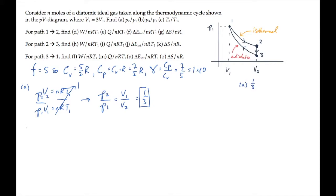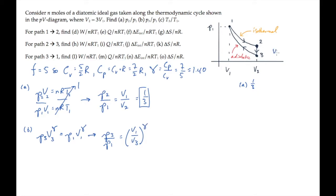Part B asks for the ratio P3 to P1. The path joining 1 and 3 is an adiabatic, so we can use PV to the gamma equals a constant, and solve for the ratio. It equals the ratio of the volumes, 1 to 3, raised to the gamma power. Notice that the process from 2 to 3 occurs at constant volume, so V2 equals V3. This gives us the same ratio raised to the 1.40 power, and that's 0.215.